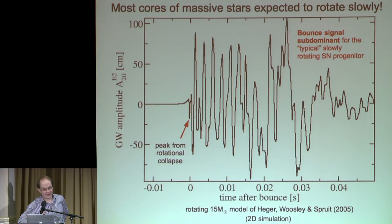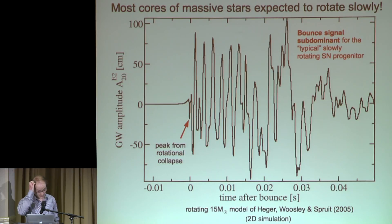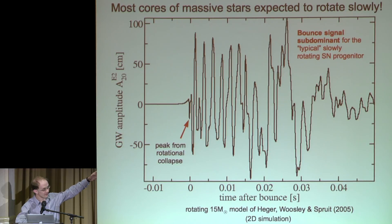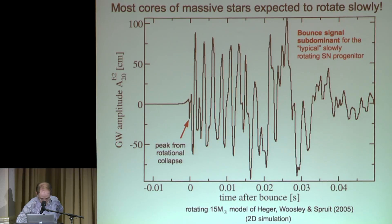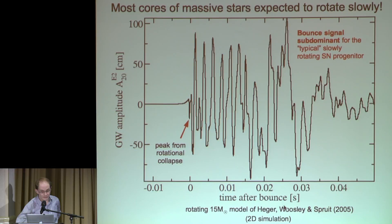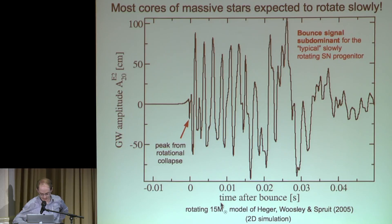Starting with a 2D example, because the relevant physics is easier to explain and the signal a bit more impressive. For an exemplary 2D simulation of a massive rotating star with the kind of rotation rates predicted, you actually find that the signal from rotational bounce for the garden variety of core collapse supernovae is not quite so impressive compared to what follows from convection and the standing accretion shock instability. That will change a bit in 3D, but more on that later. For the garden variety, the bounce signal will just be a blip in the signal and not more.